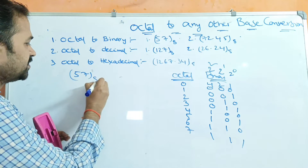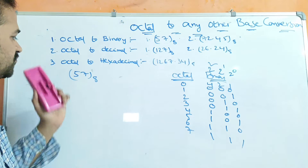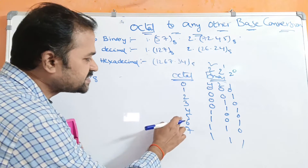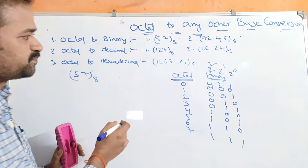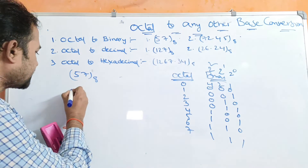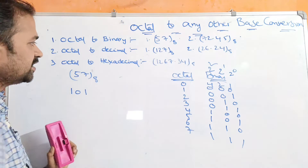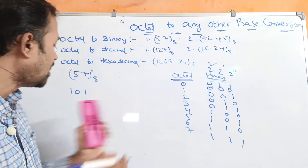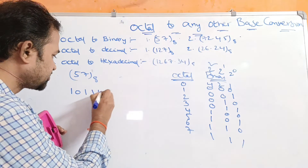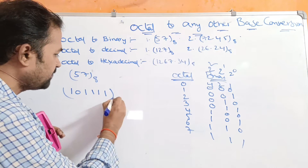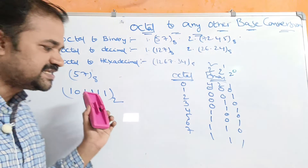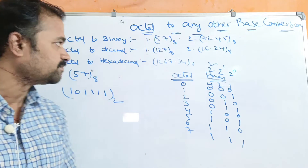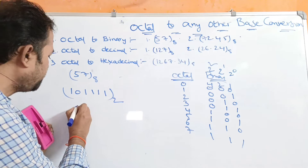Let us see the first problem: 57 base 8. We have to convert this octal number into binary. 5 means 101, and 7 means all 1s — so 111. Therefore the result is 101 111 base 2. This is the equivalent binary number for this octal number.